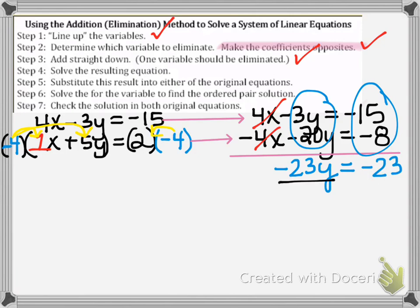So I'm done with step 3 and now I'm ready to move on to step 4. All I have to do is divide by negative 23 and then y equals positive 1.